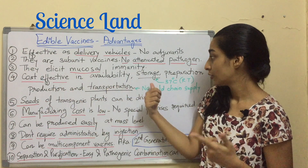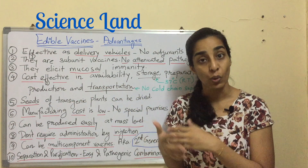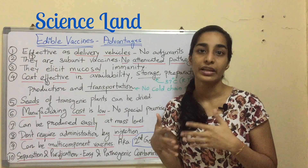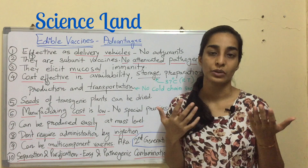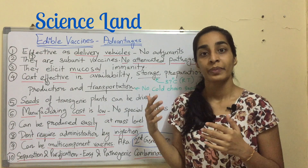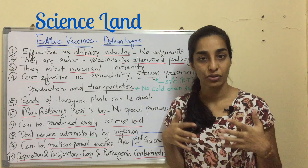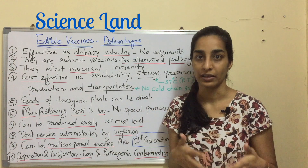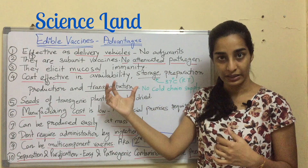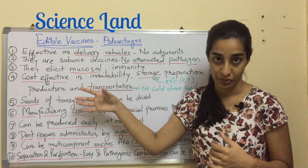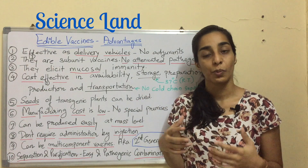Fourth, they are cost effective in availability, storage, preparation, production, and transportation. For example, edible vaccines need not be stored at 4 degrees Celsius — they can be stored at room temperature. Traditional vaccines require a cold supply chain to be transported from one place to another, but edible vaccines don't require that, so overall these factors reduce the cost.